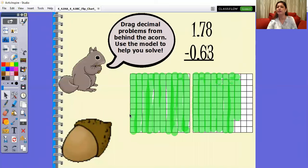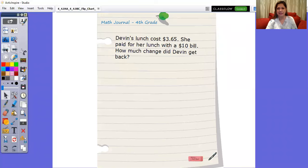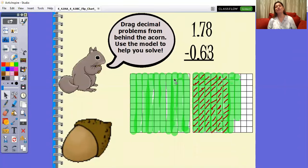Let's take a look at this one here. I have one whole - this is one whole right here - and 78 hundredths. I have 10, 20, 30, 40, 50, 60, 70, and then 78 little sections highlighted out of the 100. But my job is to subtract 63 hundredths of them.